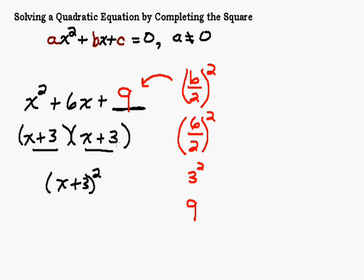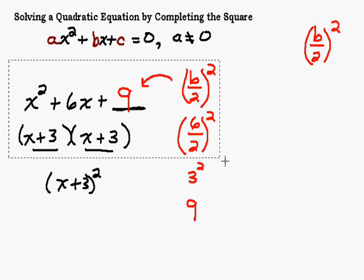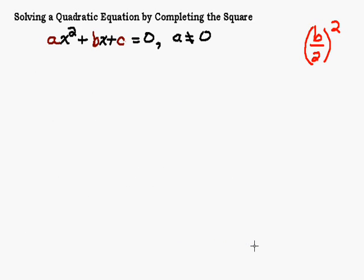So what does all this have to do with solving a quadratic equation? We're going to use this skill — remember b over 2 quantity squared — and apply it to solve a quadratic equation. Let's do x squared plus 14x minus 4 equals 0, and we want to solve this by completing the square.